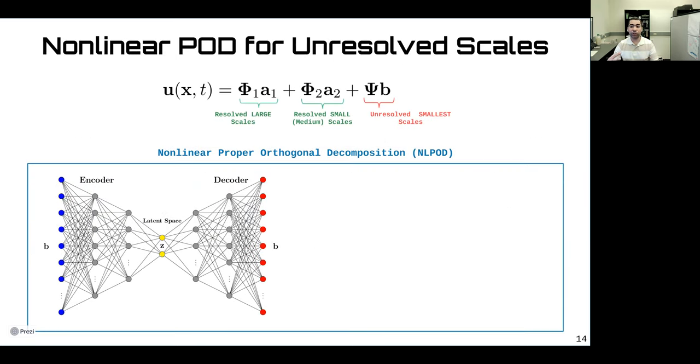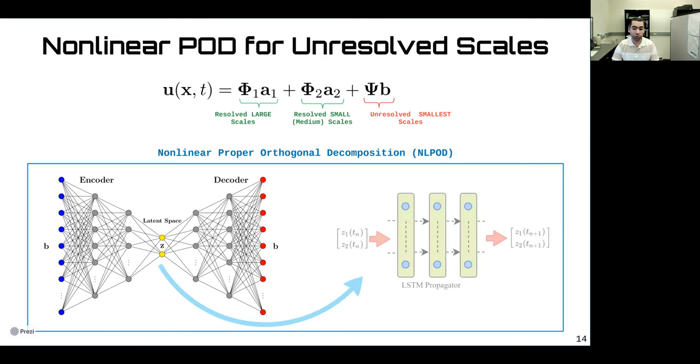We introduce the nonlinear proper orthogonal decomposition technique to reduce the projection error. Remember that we split our flow field into resolved large scales, resolved small scales, and unresolved scales. We use a Galerkin-based reduced-order model with variational multi-scale closure for the resolved large scales and resolved small scales. Now we deal with the unresolved small scales. Usually we have a large number of these small scales, and resolving all of them can be computationally expensive. So we use a feedforward autoencoder to identify the inter-correlation between these scales, and then learn a small or a compressed representation of these scales. Then we use an LSTM model to propagate this latent space variable z forward in time.